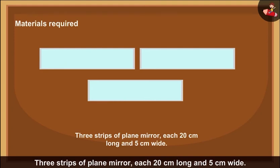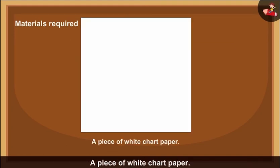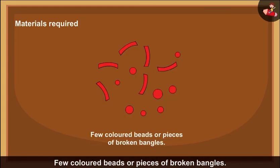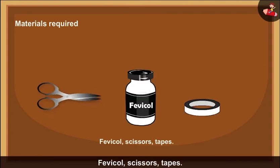1. Three stripes of plain mirror, each 20 cm long and 5 cm wide. 2. A piece of white chart paper. 3. A few colored beads or pieces of broken bangles. 4. Fevicol, scissors, tapes.